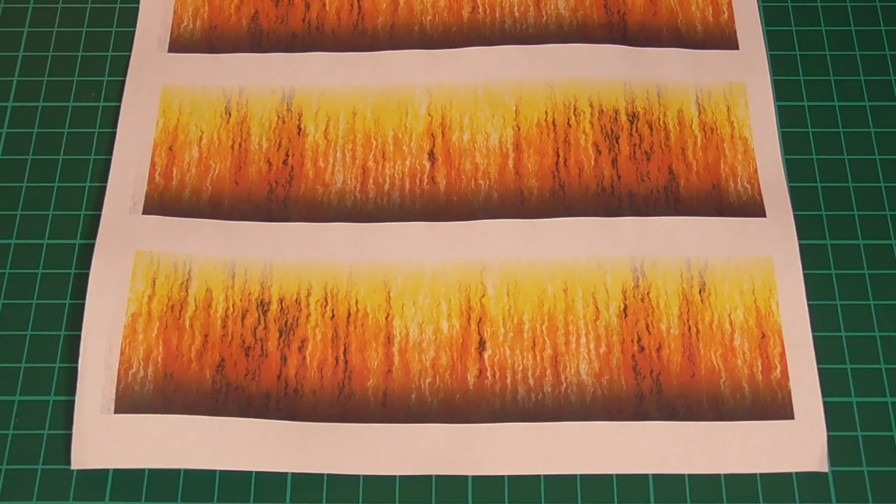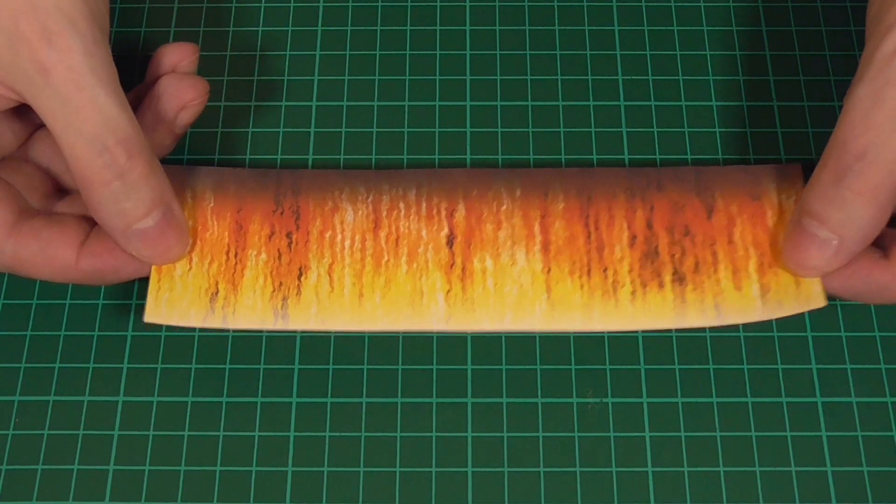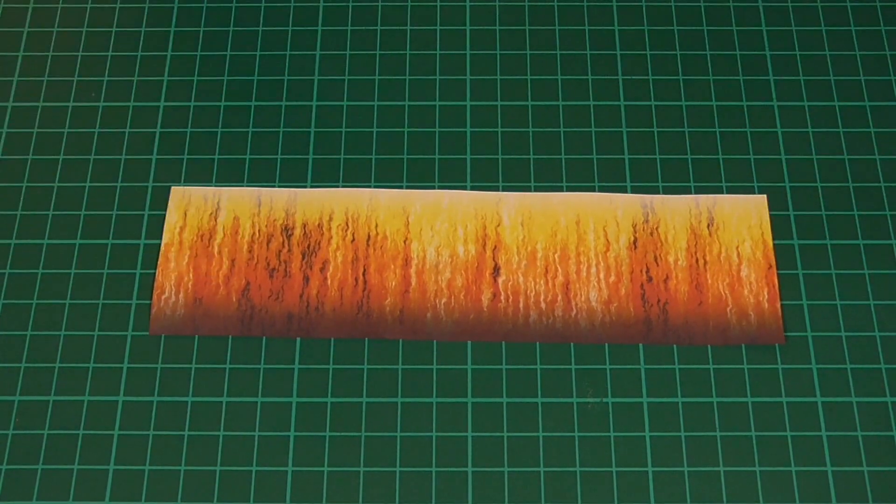The first thing we'll need to do is print out the fire texture, and we're going to need to do this on both sides of the sheet of paper so that when we cut it out we have the same texture on both sides, like you can see here.